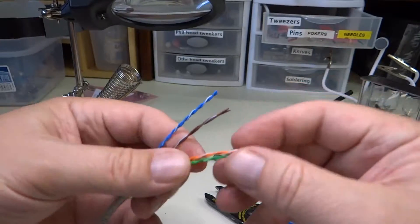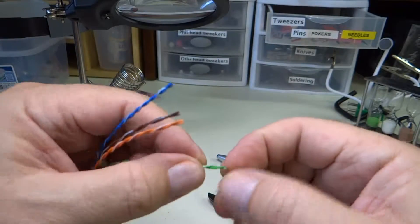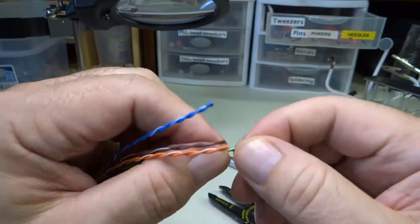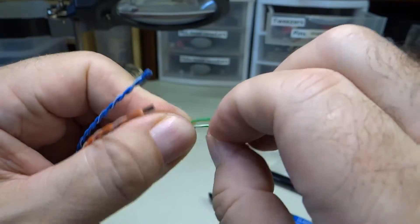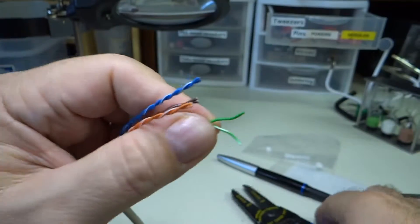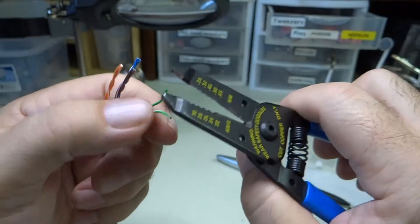So now we're going to take each one of these twisted pairs. We're going to untwist it a bit at the end here. Separate the wires out a bit. And then we're going to strip the ends.